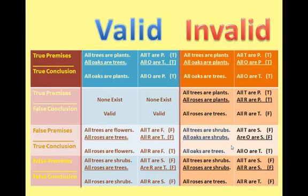Look at the third row and the fourth row. These are other combinations of truth values, where we have false premises and a true conclusion in the third row, and false premises and a false conclusion in the fourth row. Notice that we can find examples of arguments that are either valid or invalid with that combination of truth value. That shows it is useless to use truth value as the means to determine validity or invalidity.